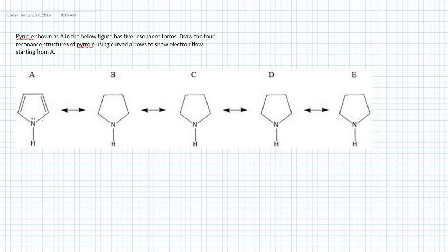In this question we need to start from A and draw four more resonance forms using curved arrows. If you look at structure A, you can see that we have a pi bond next to a pi bond, then a single bond sigma bond, and at the end of the sigma bond we have an atom with a lone pair. We have to use the lone pair electrons to introduce a pi bond here, and use the double bond electrons to make lone pair electrons.